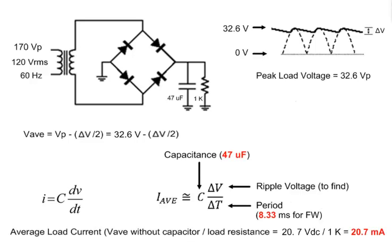Finally, we know the approximate average load current that flows through the capacitor when it discharges. It's calculated by dividing the average voltage without a capacitor by the load resistance. In this case, we have 20.7 milliamps.